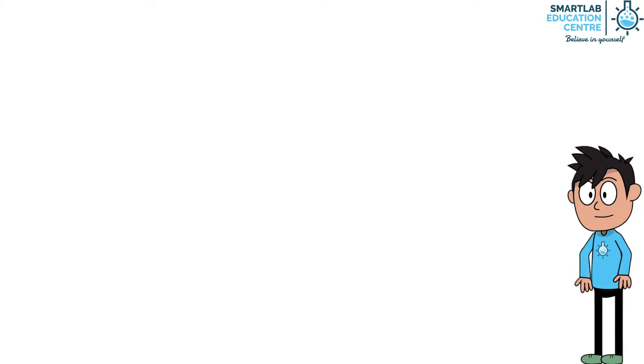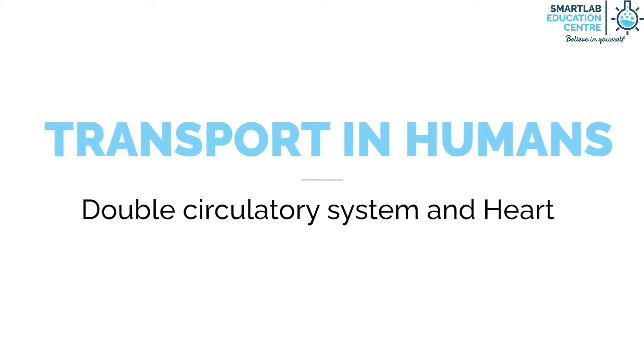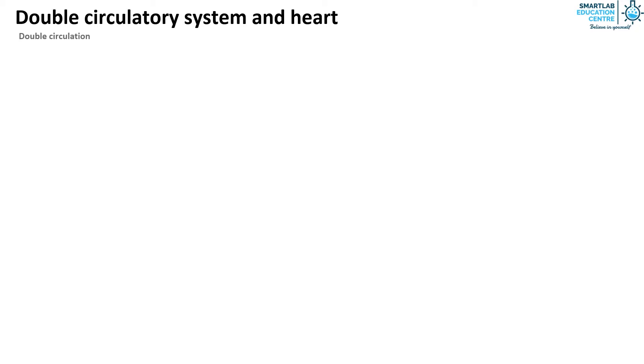Welcome back everyone. Today we learn about the double circulatory system and heart. Double circulation means that the blood passes through the heart twice in one complete circuit.